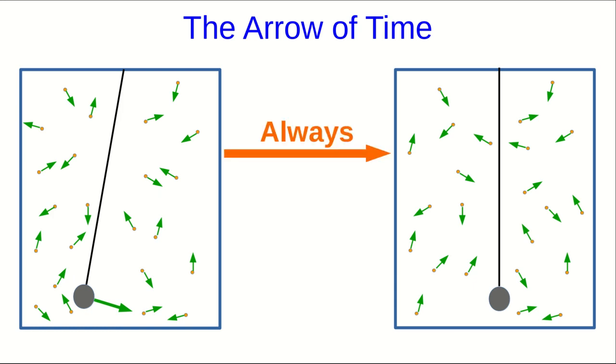This is the direction that this process always happens. The reverse process, where the air spontaneously cools down and sets the pendulum in motion, never happens. So this is sometimes called the arrow of time. There are forward processes which happen, and reverse ones which never happen.